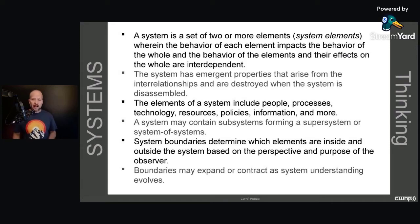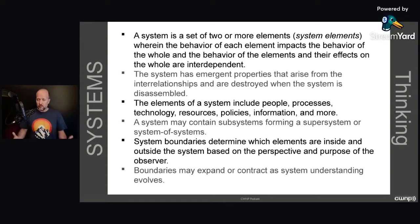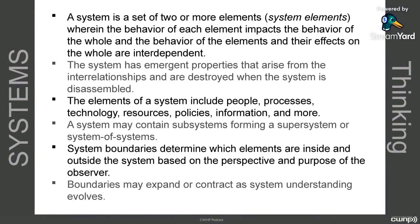It's very important to think about these concepts when we're defining what a system is. There are systems, and then there are systems of systems, and they work together to give us the end result we desire. The elements of a system include people, processes, technology, resources, policies, information, and more. A system can be an element of a larger system — it may contain subsystems that form a super system or, as we often call it in IT, a system of systems. System boundaries determine which elements are inside and outside the system based on the perspective and purpose of the observer, and those boundaries may expand or contract as system understanding evolves.